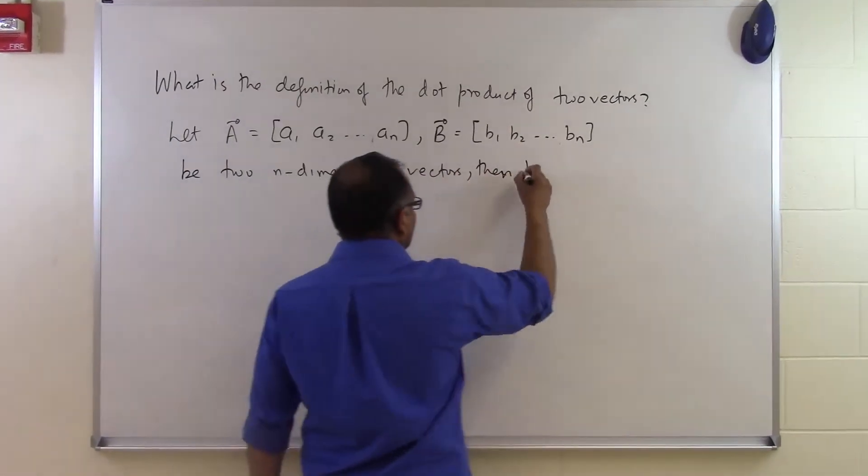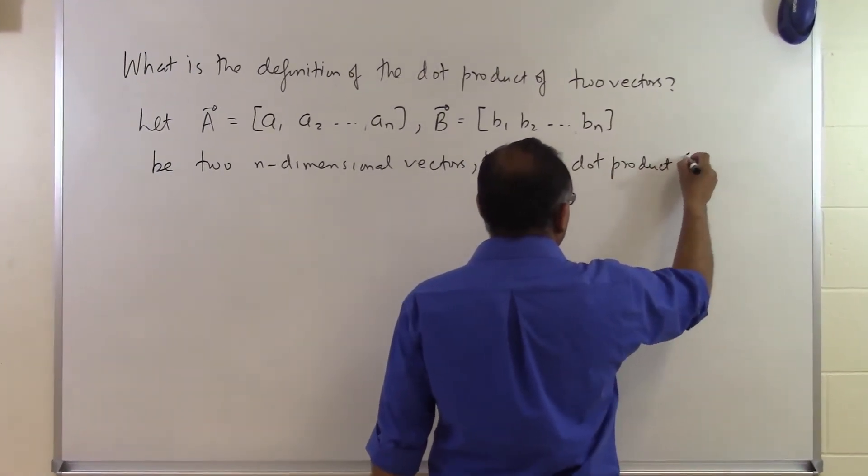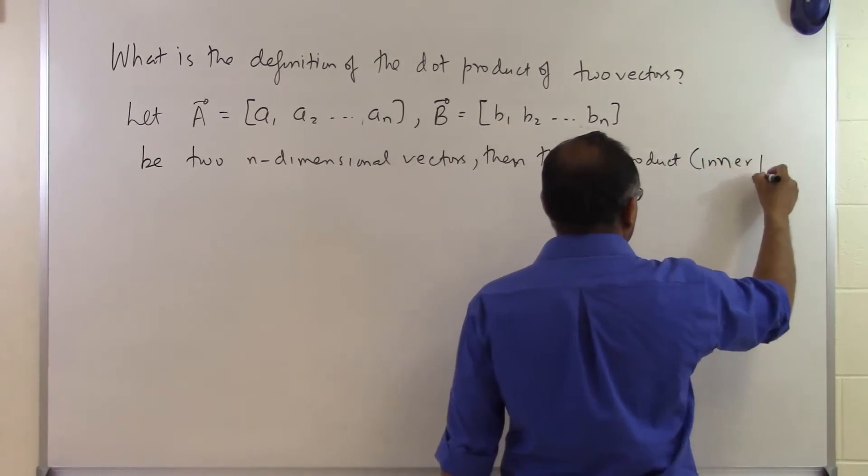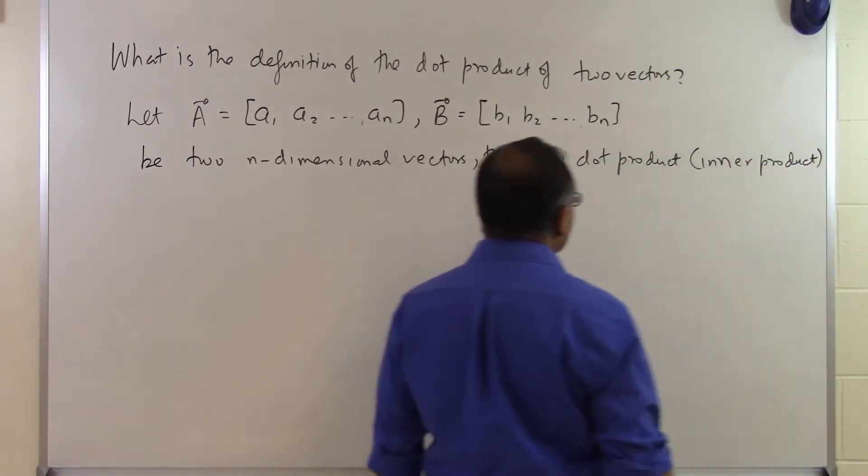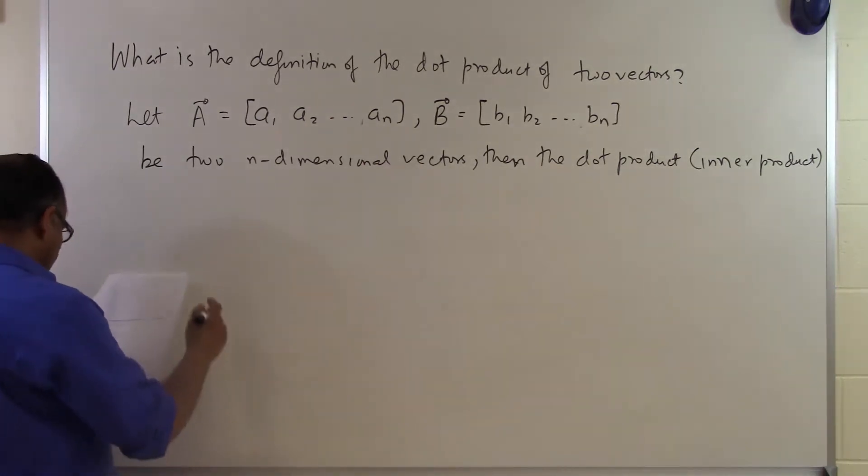Then the dot product, also called the inner product—it's up to you what to call it—is defined as follows.